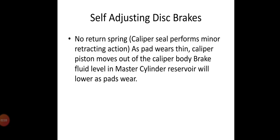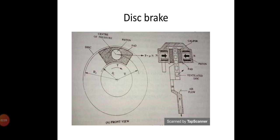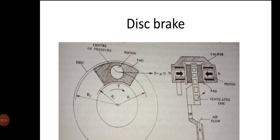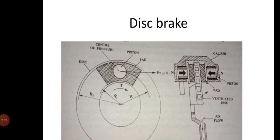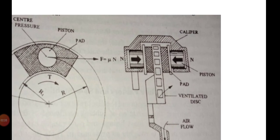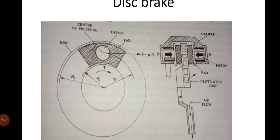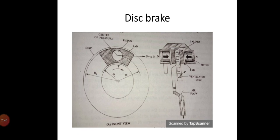You can see here — these are the main parts. This is the front view. This is the disc, and these are the friction pads. This is the caliper, the bridge member connecting the disc to the wheel hub. These are some basic diagrams of the disc brake.